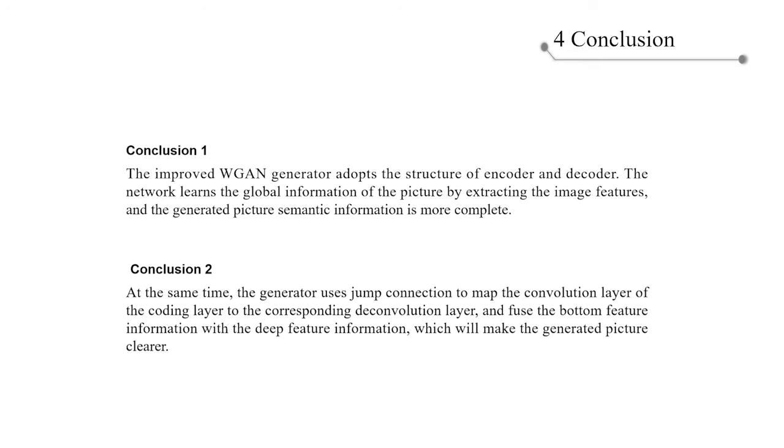Conclusion 2: At the same time, the generator uses jump connections to map the convolution layer of the coding layer to the corresponding deconvolution layer and fuses the bottom feature information with the deeper feature information, which will make the generated picture clearer.